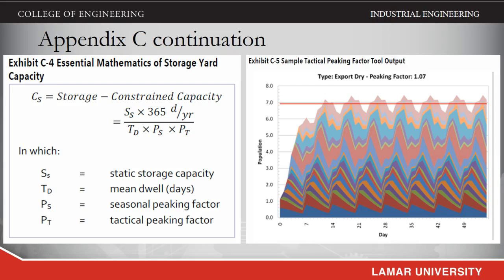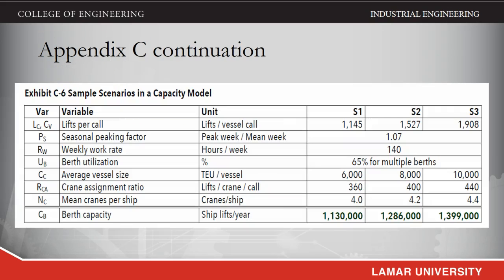Equipment quantities — quay cranes, storage yard cranes, chassis, yard trucks, etc. — can be estimated for each capacity level. While certain capacity factors can be controlled by a port, such as terminal configuration and layout, equipment deployed, and capital resources invested, capacity is also strongly influenced by external factors such as trade volumes, shipping patterns, throughput mixes, dwell times, the size and type of ships, rail and highway access, union work rules, customs regulations and security.